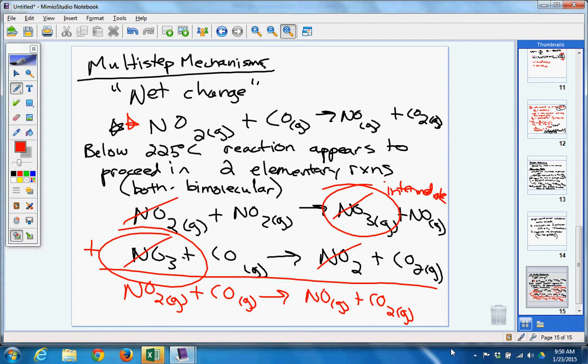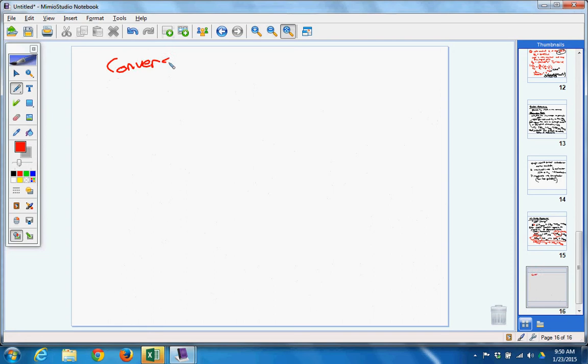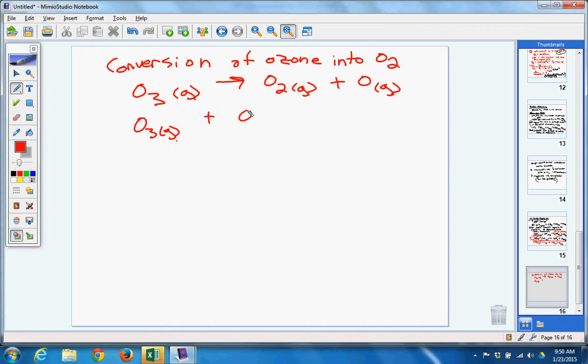So let's try one. So this is what I have. Conversion of ozone into O2. And these are the steps that they gave me. O3 gas makes O2 gas plus O gas. And I have O3 gas plus O gas makes two O2 gas. First thing I want you to do is determine molecularity.